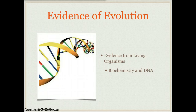Another example of evidence is biochemistry and DNA. There are very similar molecules found in all different animals and plants. DNA is how all organisms pass on genetic information, and much of this DNA is the same across species. There was probably a common ancestor that used DNA and passed it along to all of the species we have today.